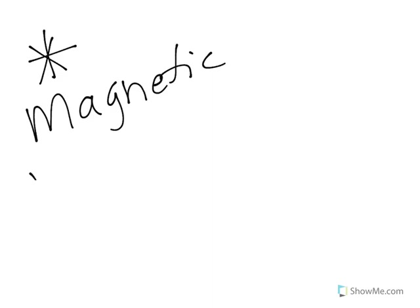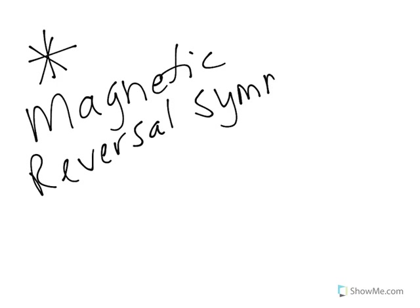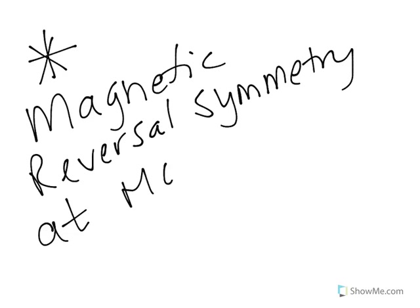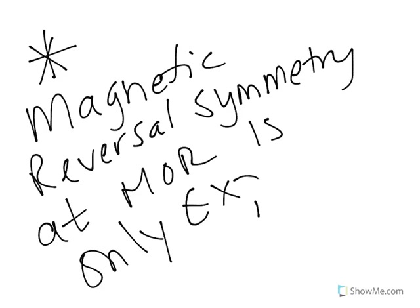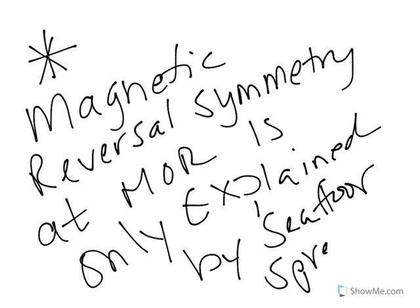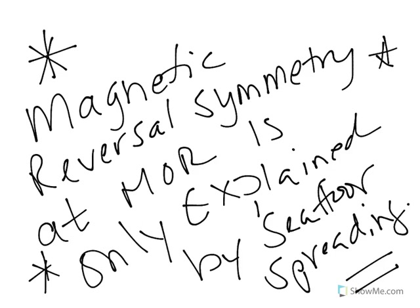So what is important, your takeaway message here, is that the magnetic reversal symmetry at the mid-oceanic ridge is only explained by seafloor spreading. This is what showed Harry Hess that the seafloor has to be in motion. So this is incredibly important. Without seeing this symmetry, we would not have known until we developed the satellites that do your GPS that the seafloor was actually in motion. So this is an incredibly important discovery that Harry Hess made.